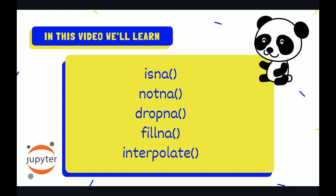The five methods are: isna, notna, dropna, fillna, and finally interpolate. Let's jump into the code and look at an example of each of these methods.